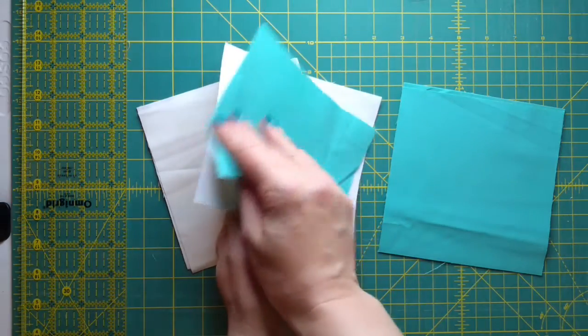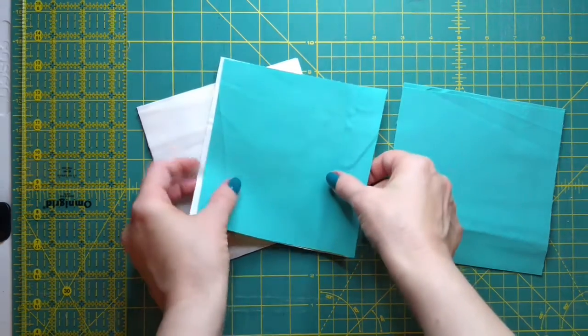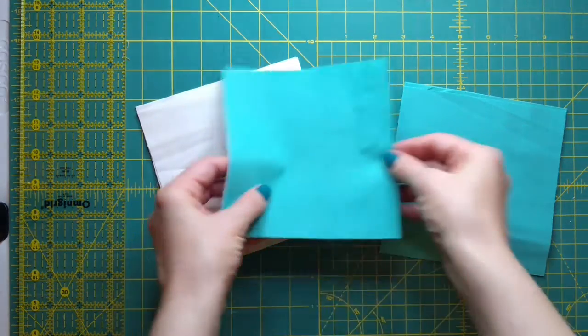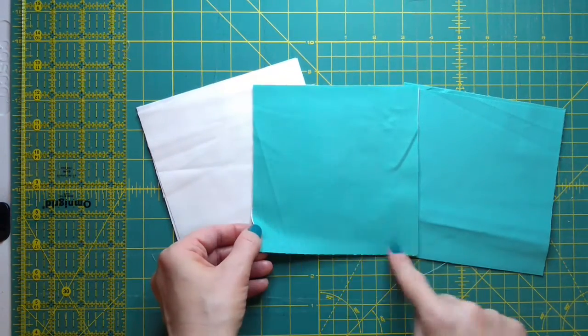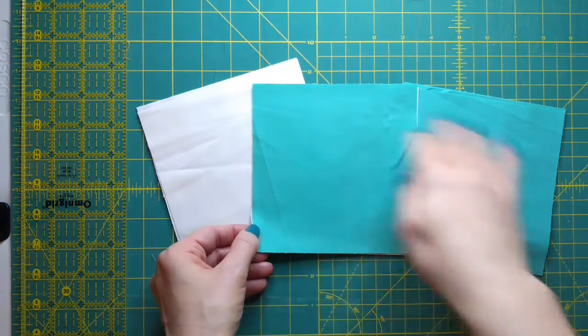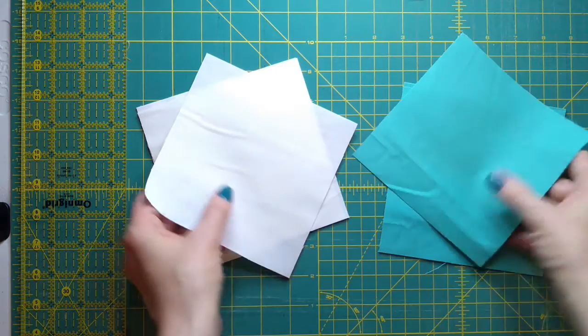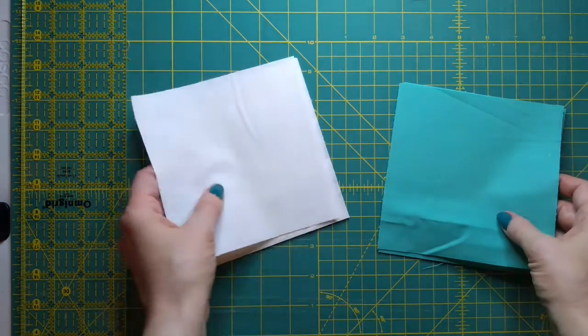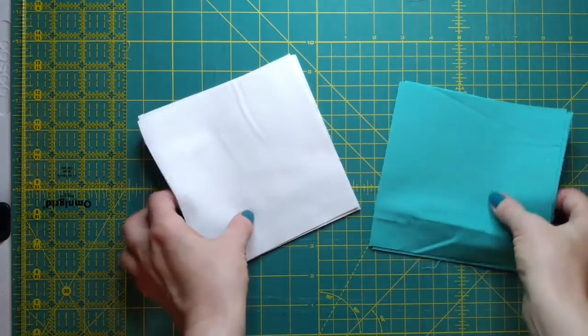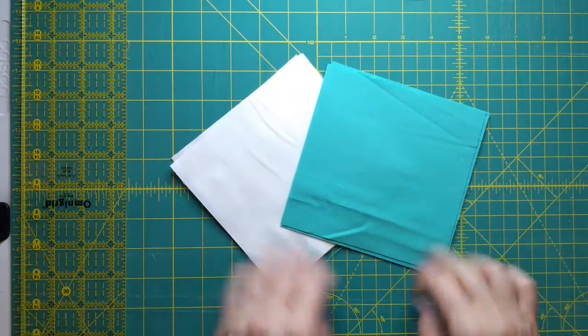You put right sides together of your two squares and you sew a quarter inch seam all the way around the perimeter, and then you cut them in pieces. I'll show you that footage from last week which will be a mustard color and cream color, and then I'll get back to this color when I assemble them.